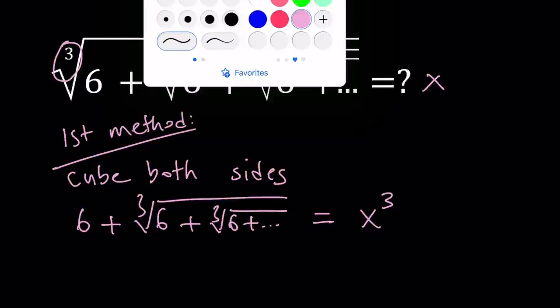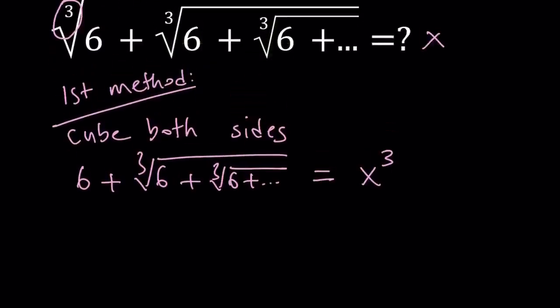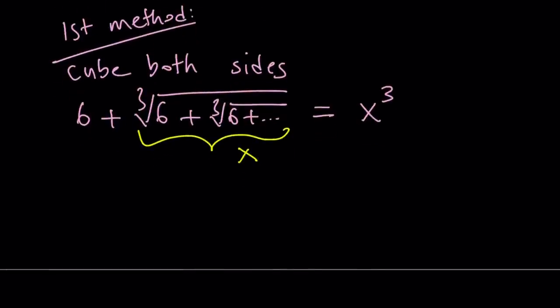With these kinds of expressions with nested radicals, notice that the expression contains itself. So, we have the same, the original expression, one more time, and you know that is equal to x. So, from here, we do get a cubic equation: x cubed equals x plus 6.